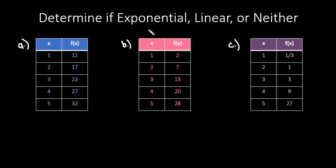For exponential, what we want to look for is that we are multiplying by the same factor each time. Linear, we are adding by the same factor each time, and neither means we're neither multiplying nor adding by the same number each time, so there's something else going on.